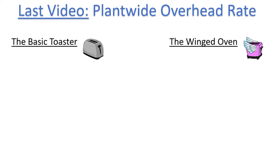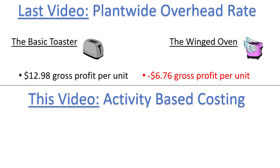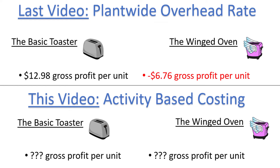In the previous video, we looked at an example of a plant-wide overhead rate applied to our two products, the basic toaster and the winged oven. We concluded that the company was making $12.98 of gross profit per basic toaster sold and losing $6.76 in gross profit per winged oven sold. In this video, we are going to apply a different overhead allocation method called activity-based costing to see if the gross profit per unit values change, or if they will be roughly the same as the numbers we found using the plant-wide rate.